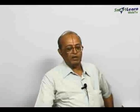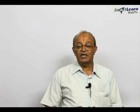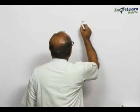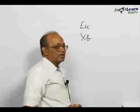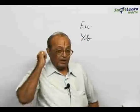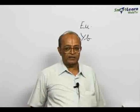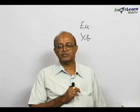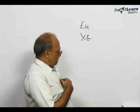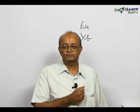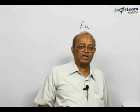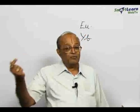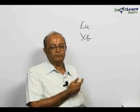Which member of the lanthanide series will exhibit a lower oxidation state? You are familiar with Europium and Ytterbium. Gadolinium is the central element in the lanthanide series. Before gadolinium comes Europium. Similarly, the last element in the lanthanide series is Lutetium, and before Lutetium comes Ytterbium.